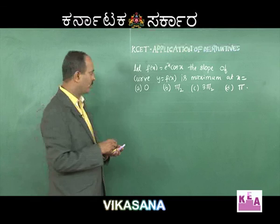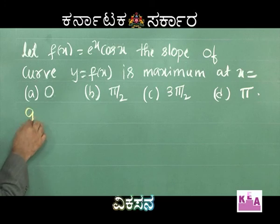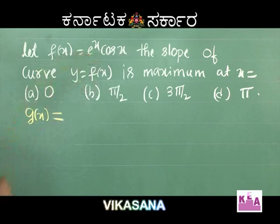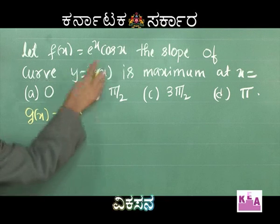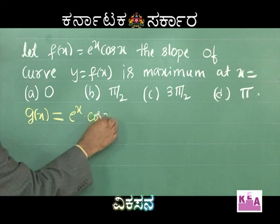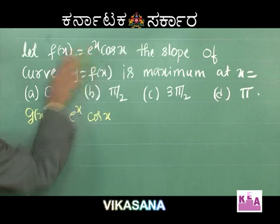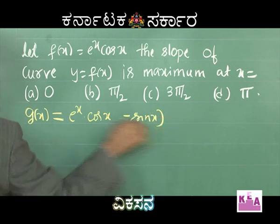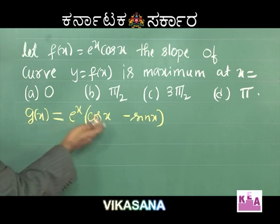Let us consider g(x) itself as f'(x). g(x) is the differentiation of eˣ cos x, that is eˣ into cos x, keeping cos x constant — differentiation of eˣ is eˣ. Now keeping eˣ constant, differentiation of cos x is −sin x. So g(x) = eˣ(cos x − sin x).